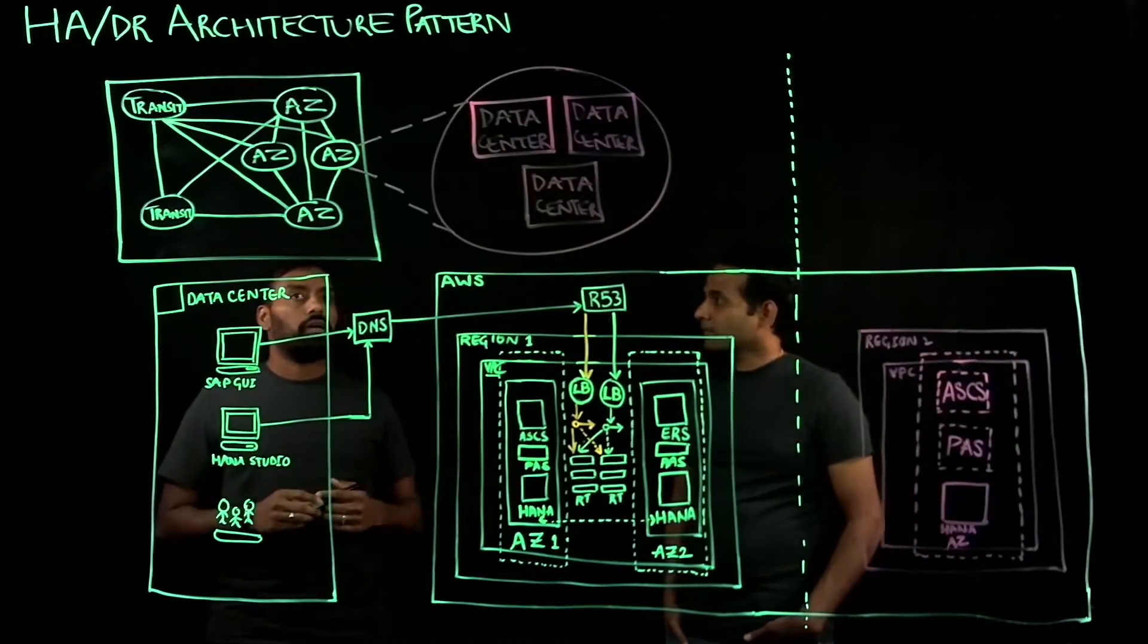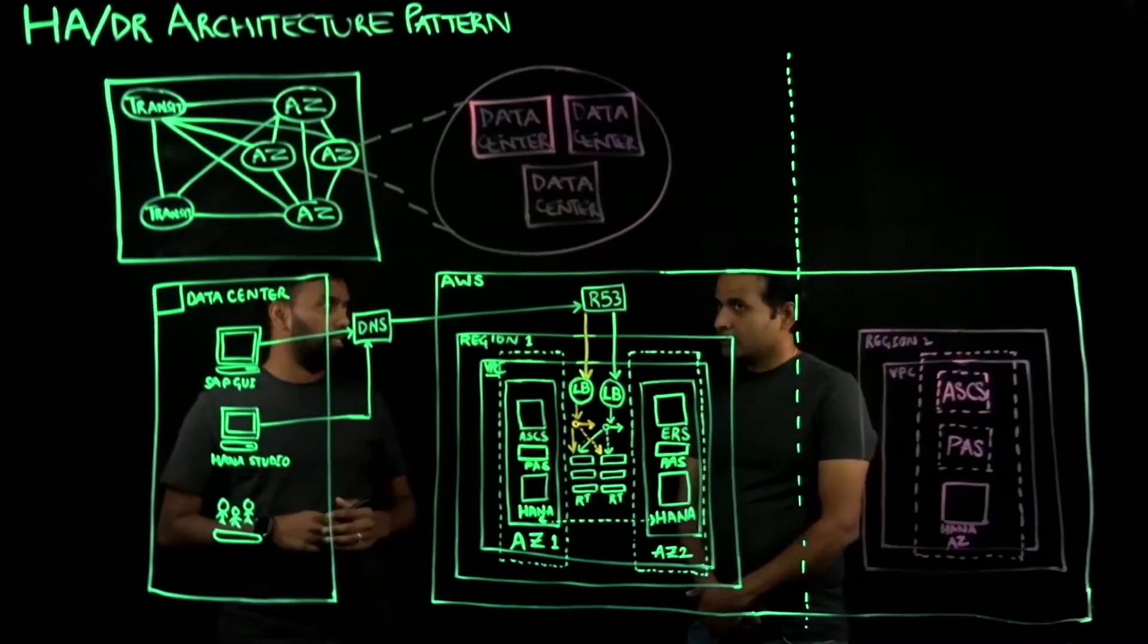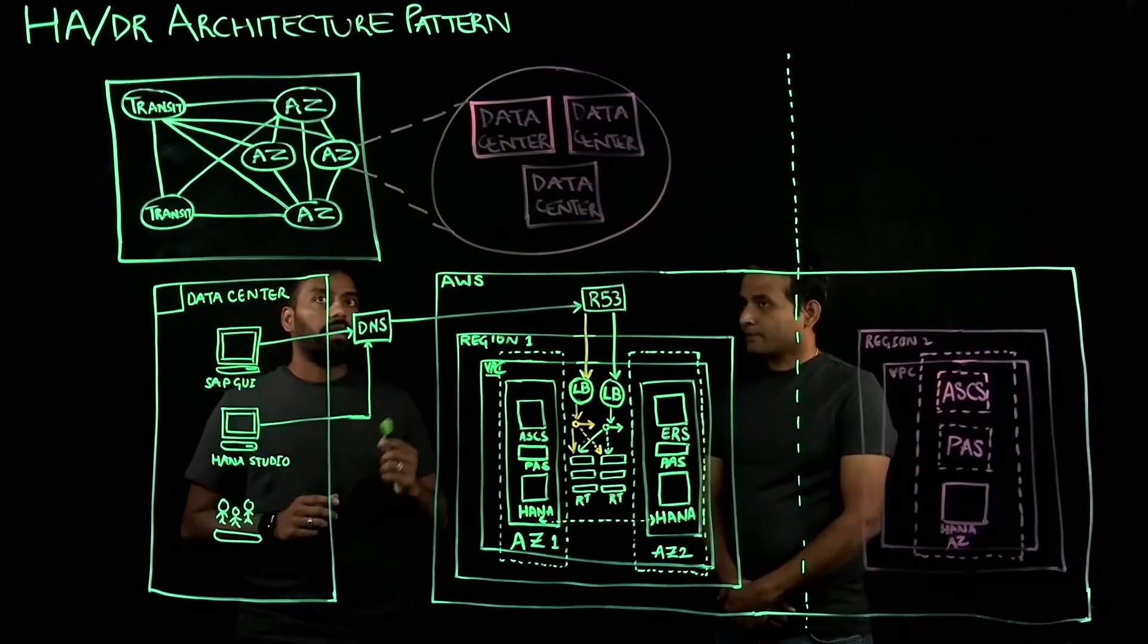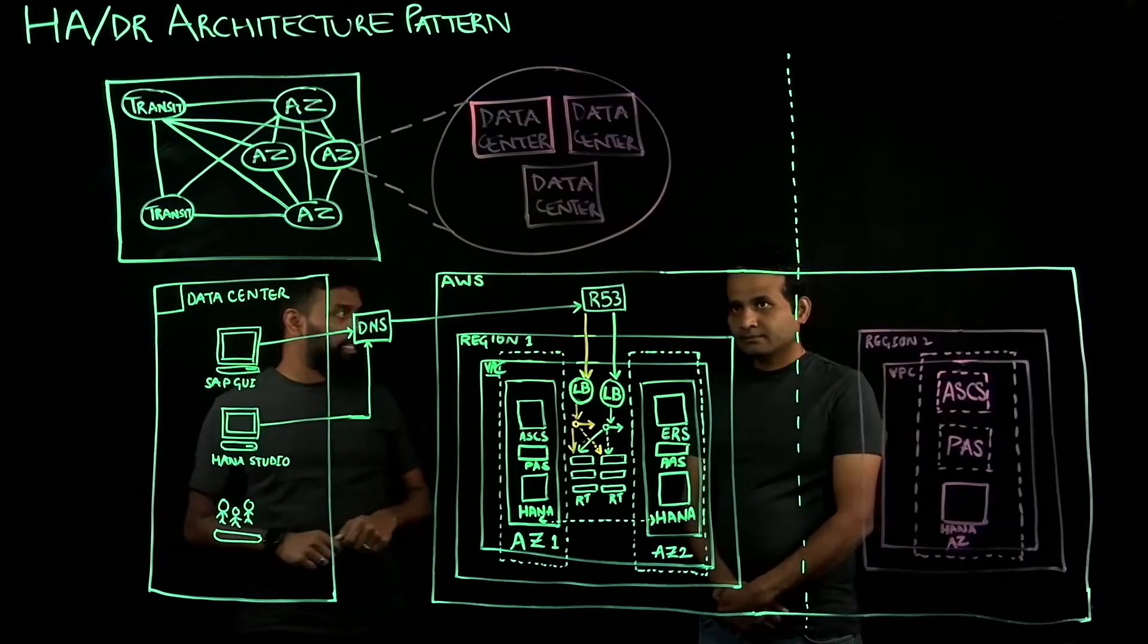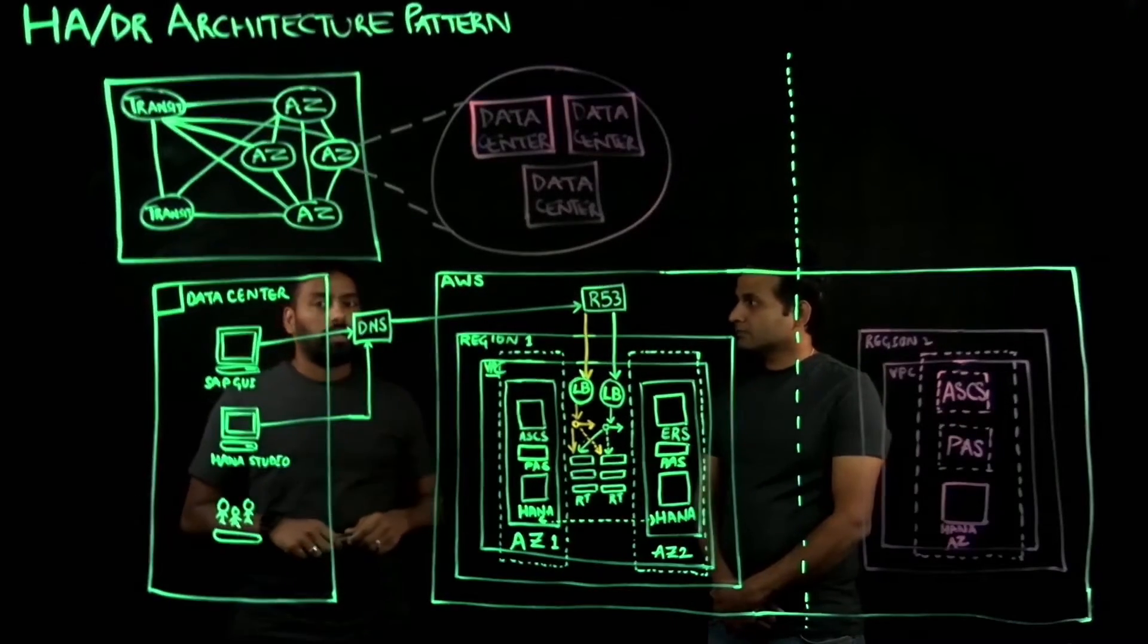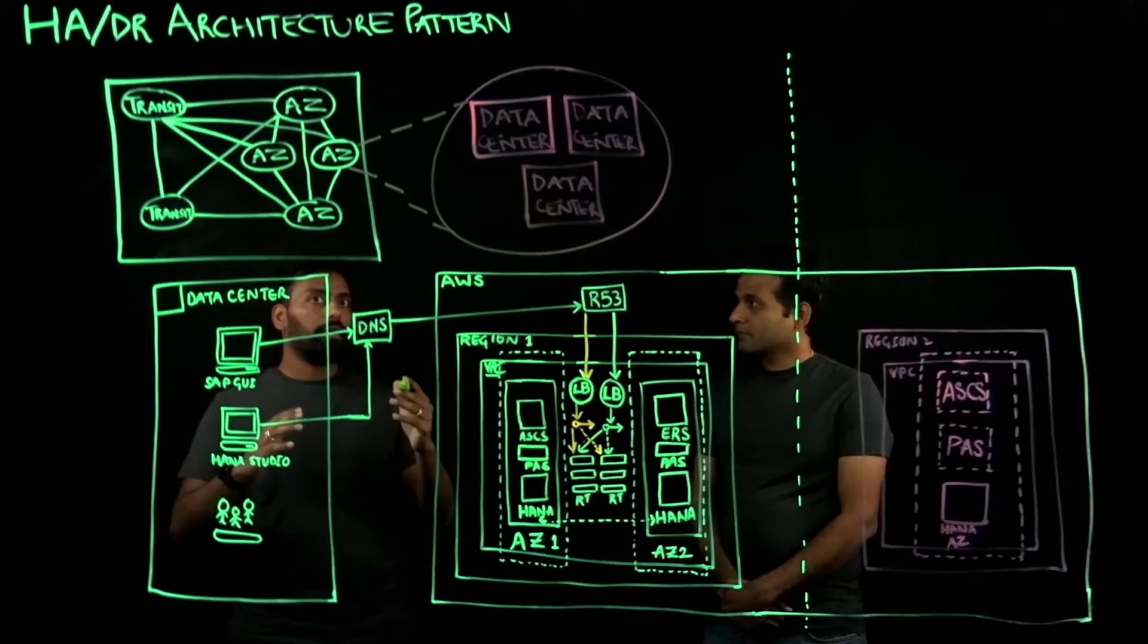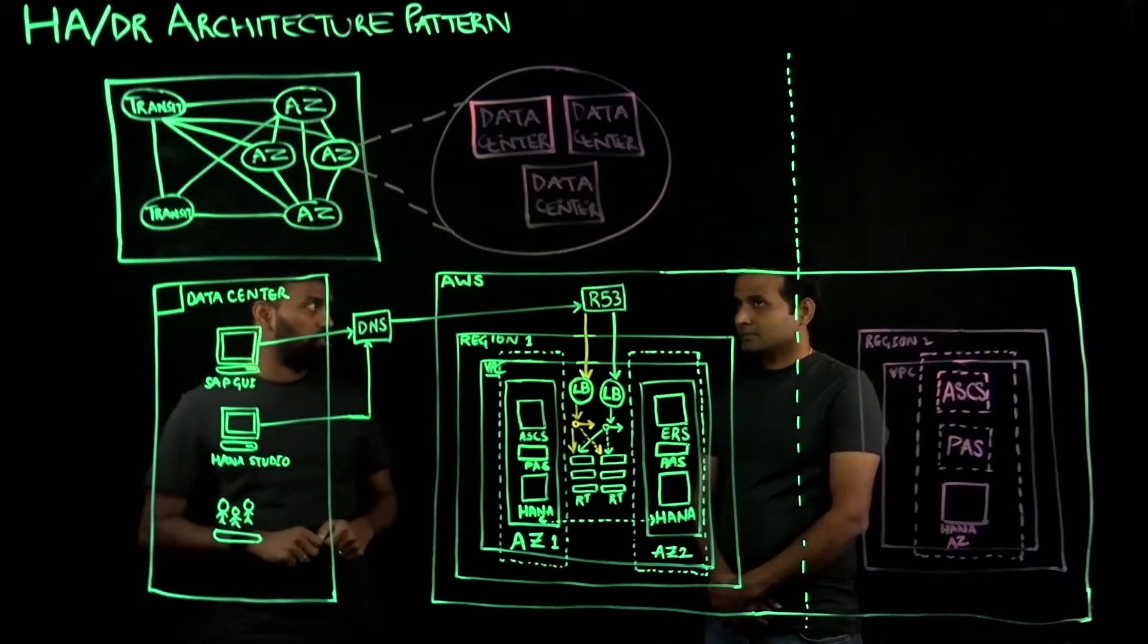These availability zones are connected with low latency and high bandwidth connectivity which enables customers to deploy production SAP systems to achieve high availability. Within each availability zone you have one or more discrete data centers which have their own networking, cooling, and infrastructure facilities. That way they are totally isolated from each other. And the way we achieve high availability for SAP is by leveraging this AWS global infrastructure.